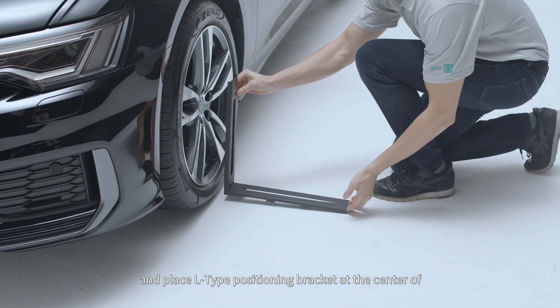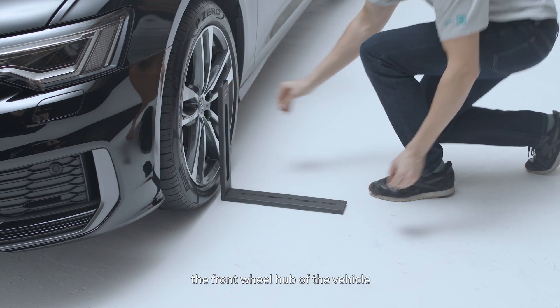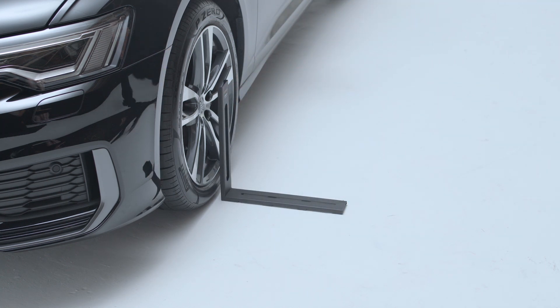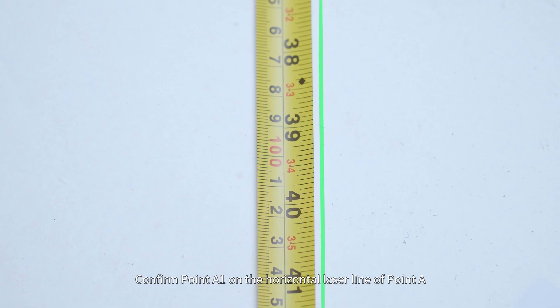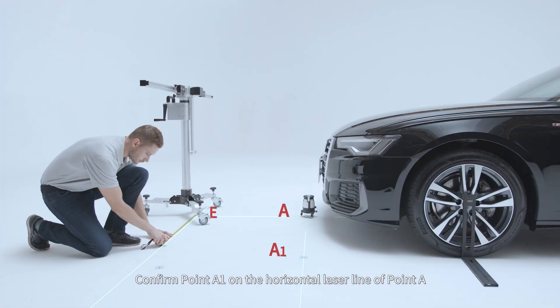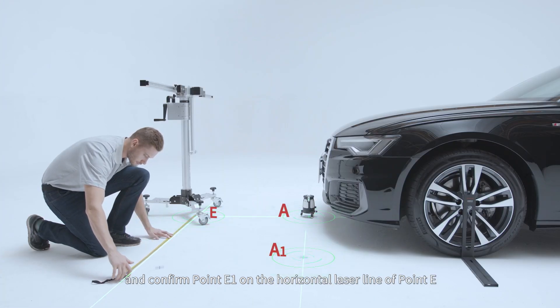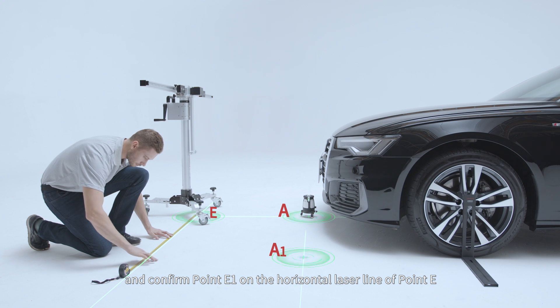Place L-type positioning bracket at the center of the front wheel hub of the vehicle. Confirm point A1 on the horizontal laser line of point A. And confirm point E1 on the horizontal laser line of point E.